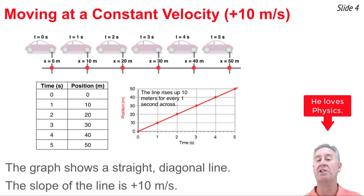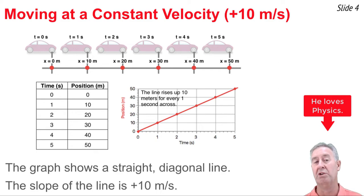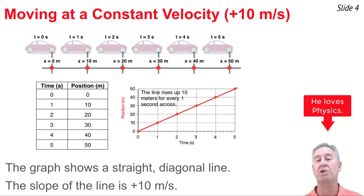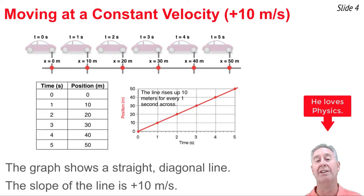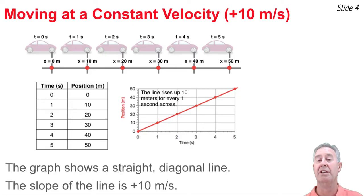So in both of these analyses, we observe that for constant velocity motion, the line on a position-time graph is a straight diagonal line, and the slope of that line is equal to the velocity of the object.